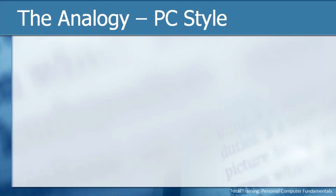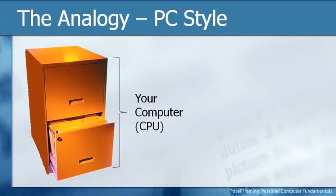Now let's take that analogy PC style. We still have a variety of things that we need to keep track of, and on a computer we keep track of these things on the computer itself — in the CPU. For our purposes and our analogy, we're going to be storing everything either on a hard drive, a CD drive, or a USB drive that we keep right in the computer itself.